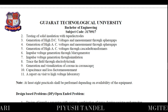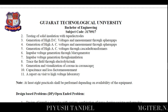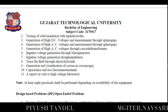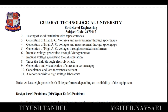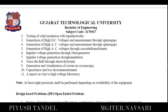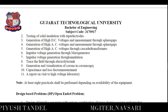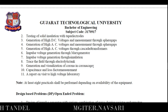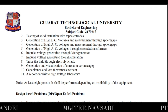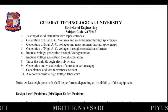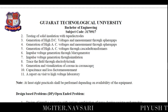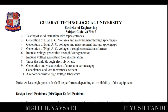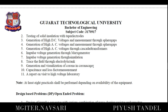Experiment eight: analysis of electric field through an electrolytic tank. Experiment nine: generation and visualization of corona in a corona cage — we have a corona cage setup where we observe corona formation at specific voltage levels, which produces a visible violet glow. Experiment ten: capacitance and loss angle measurement. Experiment eleven: a report on visiting the high voltage laboratory. After performing all ten experiments, you must prepare a complete report with conclusions for final submission.